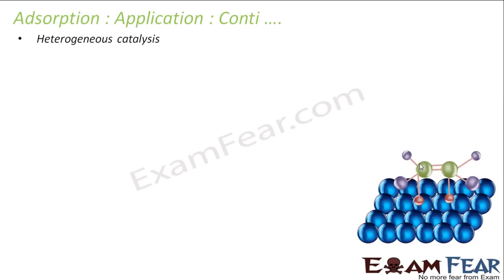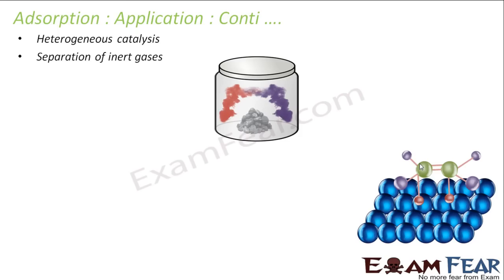Adsorption is also used to separate inert gases. As physical adsorption depends on the adsorbent and adsorbate, it may happen that gas one has more tendency to get adsorbed on charcoal than gas two. If you have a jar containing both gases, charcoal will selectively adsorb gas one. You then take out the charcoal, put it in another beaker, and heat it — desorption takes place and the gas comes out. By controlling adsorption and desorption at different temperatures, you can separate the inert gases.